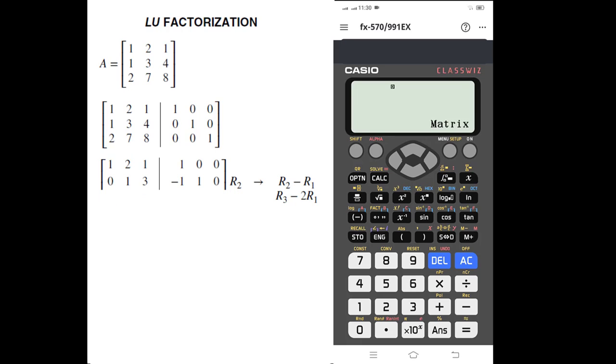The next operation is R3 minus 2R1. So matrix C minus 2 matrix A. This is our answer: 0, 3, 6, -2, 0, 1. We will store this value in matrix C. Okay, so our first step is done.